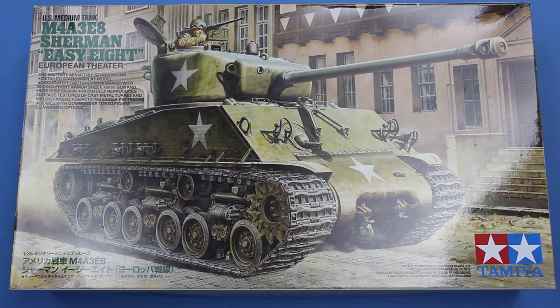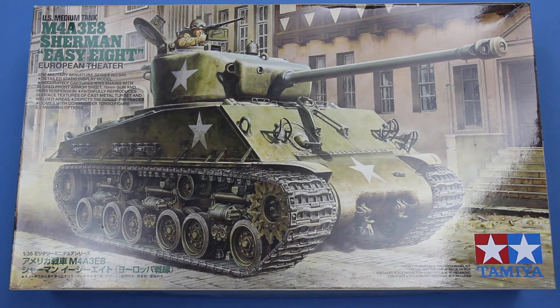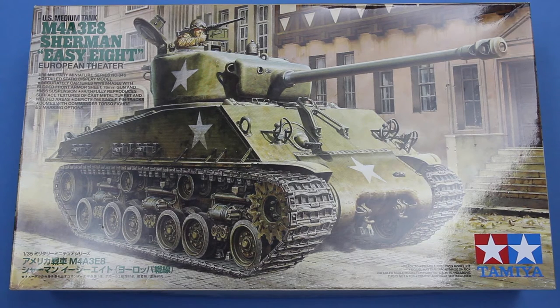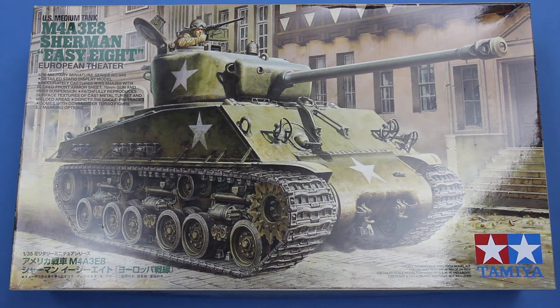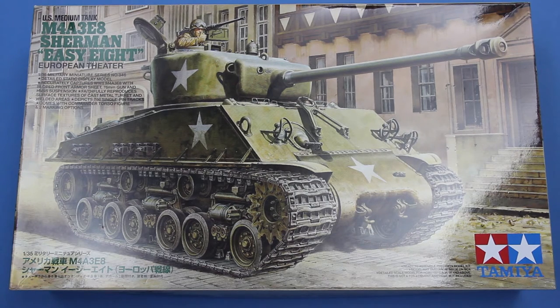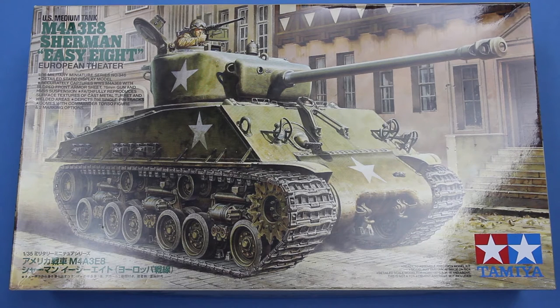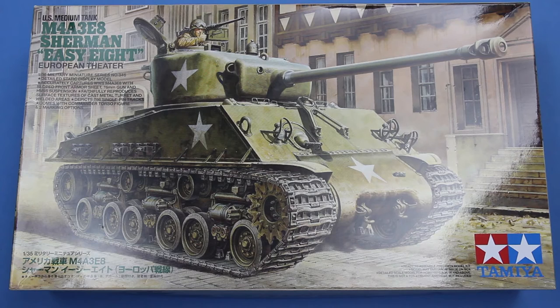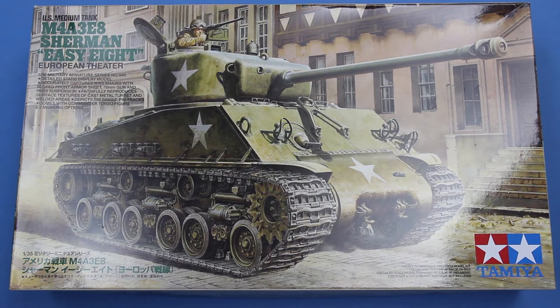I must admit I'm not quite sure where the EZ8 moniker comes from. The crews, as far as I can tell, seem to refer to them as medium tanks with wide tracks and the official army name for them was Tank Medium M4 with 23 inch tracks. But at some point they were called the EZ8 and that seems to be the nickname that stuck, especially amongst modellers.